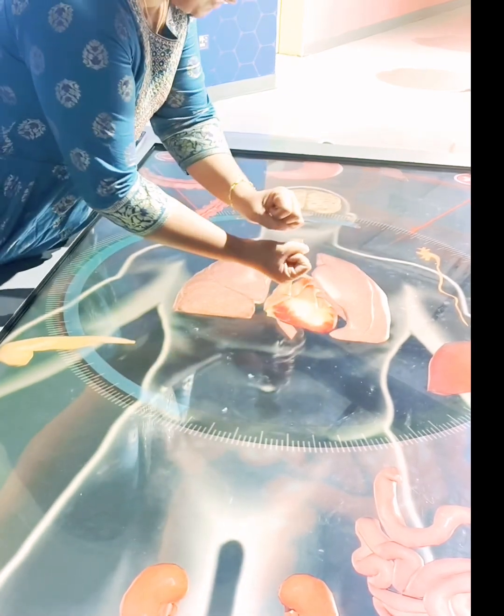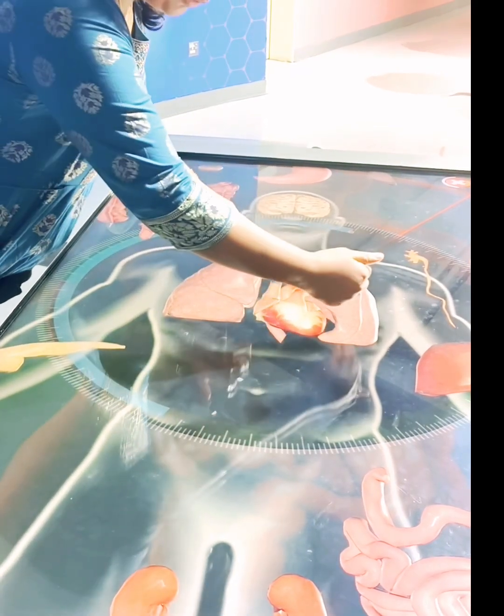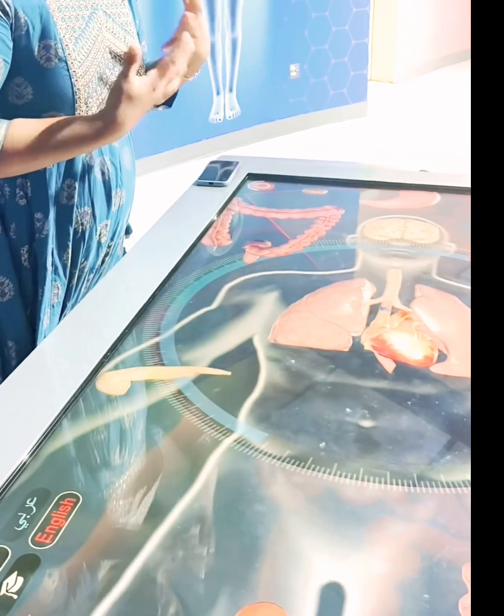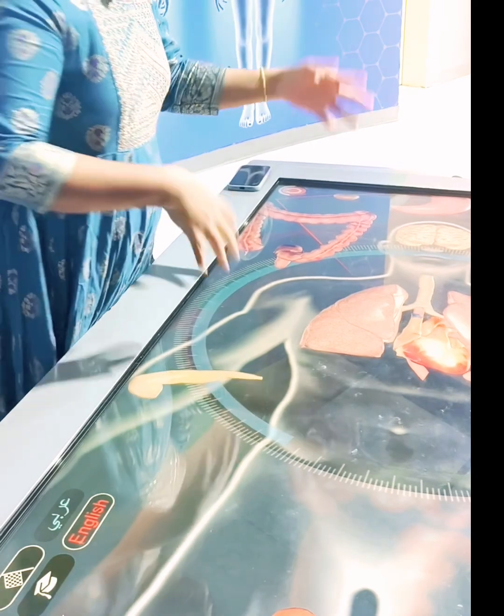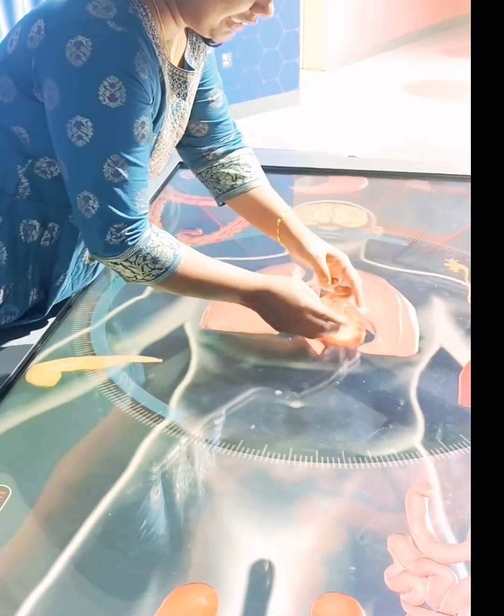Then in between the lungs we have the heart located. So the heart is located between your lungs in the middle of the chest. In the heart structure, as you can see, the apex side, that is the lower end, it is tilted towards the left side of the body. That's why when patients experience chest pain, they always say they have chest pain radiating towards the left side of the body.